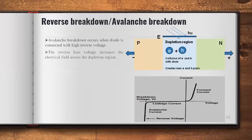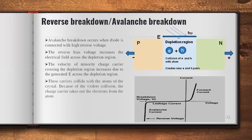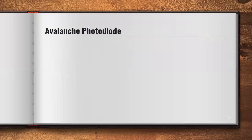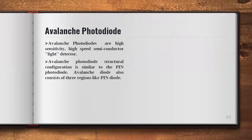This avalanche breakdown is possible by applying high reverse voltage. The velocity of minority charge carriers crossing the depletion region increases due to the generated electric field, and these carriers collide with the atoms of the crystal — because of this violent collision, the charge carrier knocks out electrons from atoms. Avalanche photodiodes are high sensitivity and high speed semiconductor detectors. Compared to PIN and PN junction photodiodes, avalanche photodiodes have higher sensitivity and higher speed detection capability.